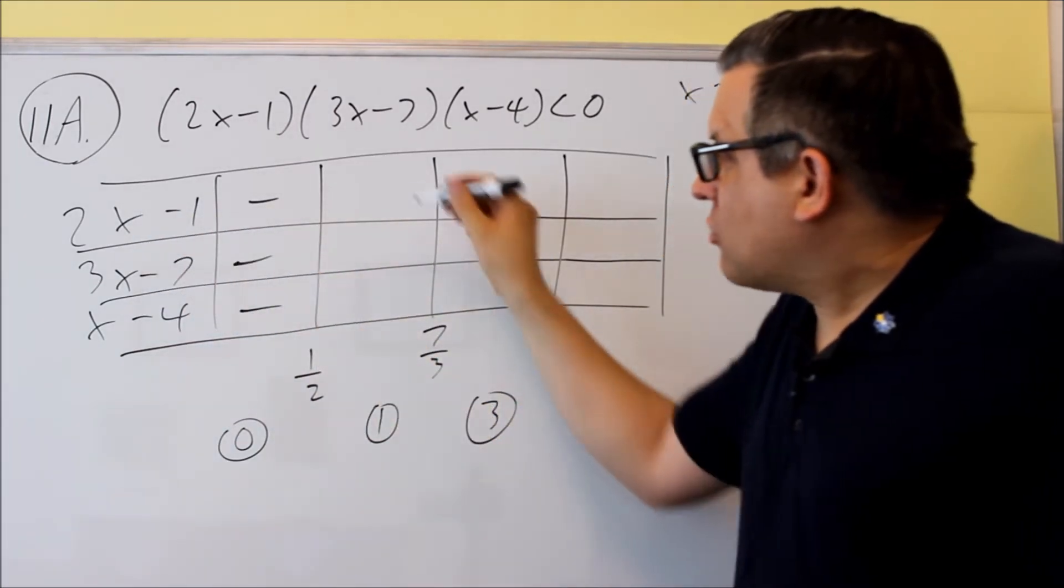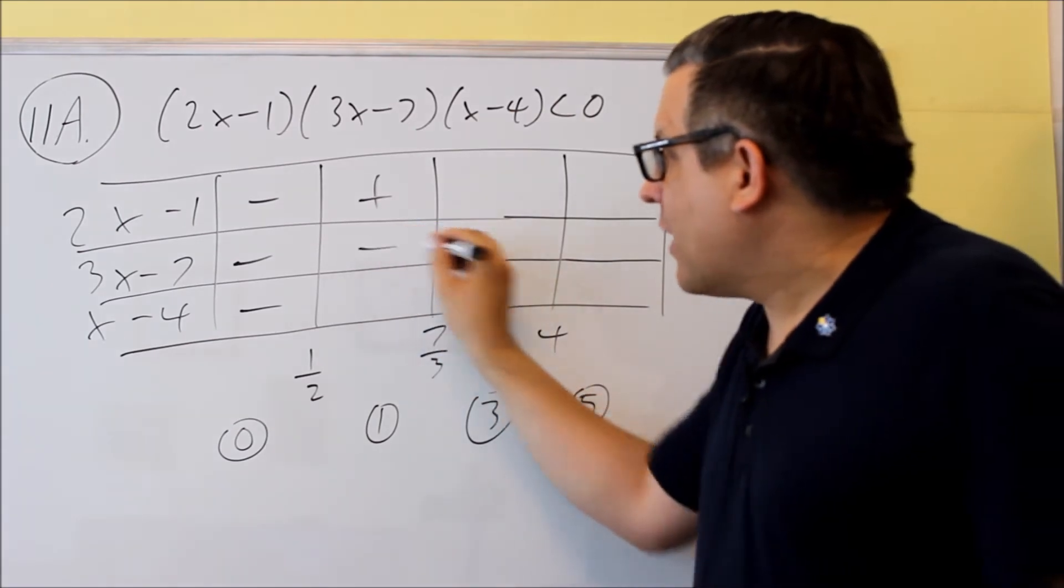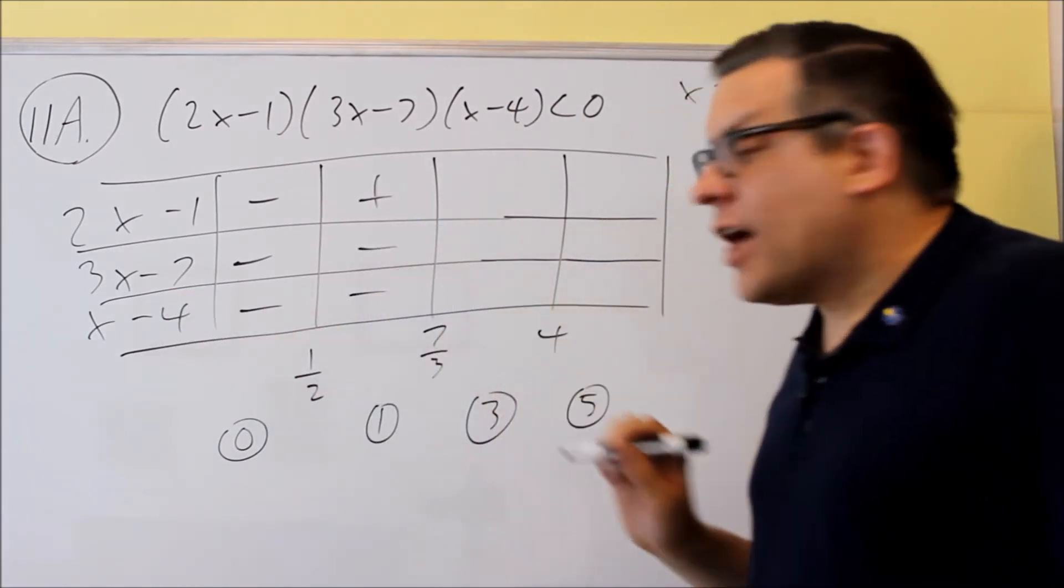Next I'm going to put a one into these. If I put a one, two times one minus one is positive. Three times one minus seven, negative. One minus four, negative.